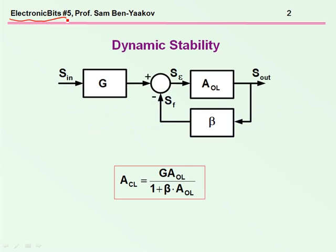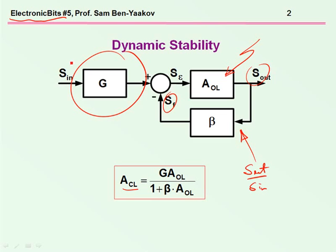any operational amplifier-based system can be presented by this simple block diagram. What we have here is an input section G, and then we have the open loop gain, and then beta, which is the ratio between the return signal to the output. Now, for this system, the closed-loop response, that is the ratio between the output over the input, this ratio can be expressed by this equation.